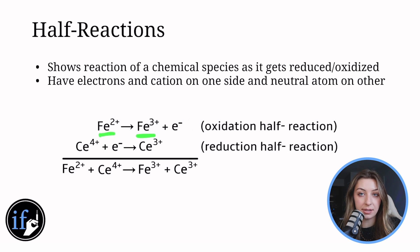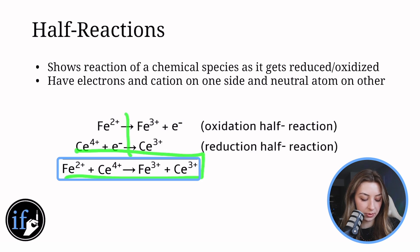So Fe²⁺ going to Fe³⁺ means you are losing electrons because they show up right here when they were initially in this Fe²⁺. So you're losing electrons, that's oxidation. You have this and you are adding electrons, so that's going to be a gain of electrons and that's going to be a reduction half reaction. Then you can add these two together to get the full equation.